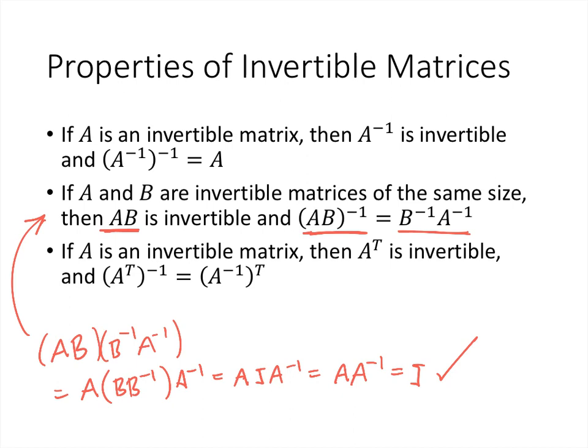Finally, if A is an invertible matrix, then its transpose is also invertible, and the inverse of the transpose is the transpose of the inverse.